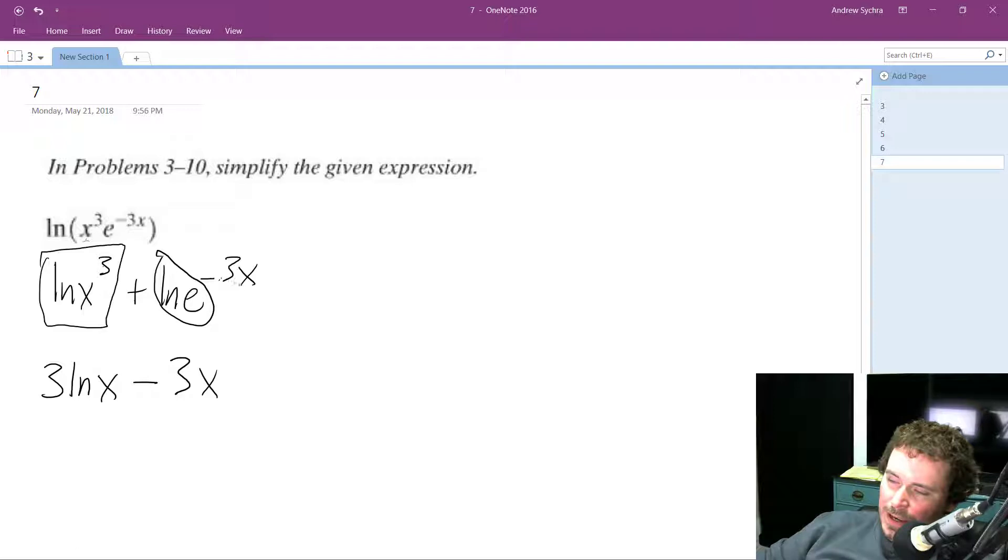It just pulls down whatever the exponent is. So in this case minus three x. So three times the natural log of x minus three x. And that's it.